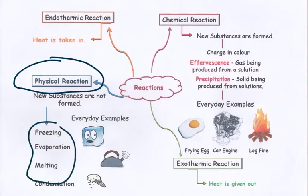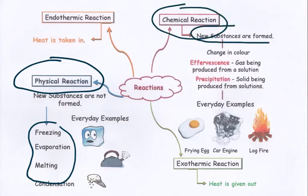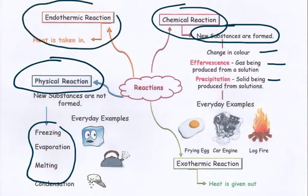Chemical reactions — always a new substance is formed in a chemical reaction. Indicating this, there are several different things you might observe: a colour change, a gas being given off, a precipitate — a solid being formed — and energy changes where the thing gets cold as heat is taken in from the surroundings.